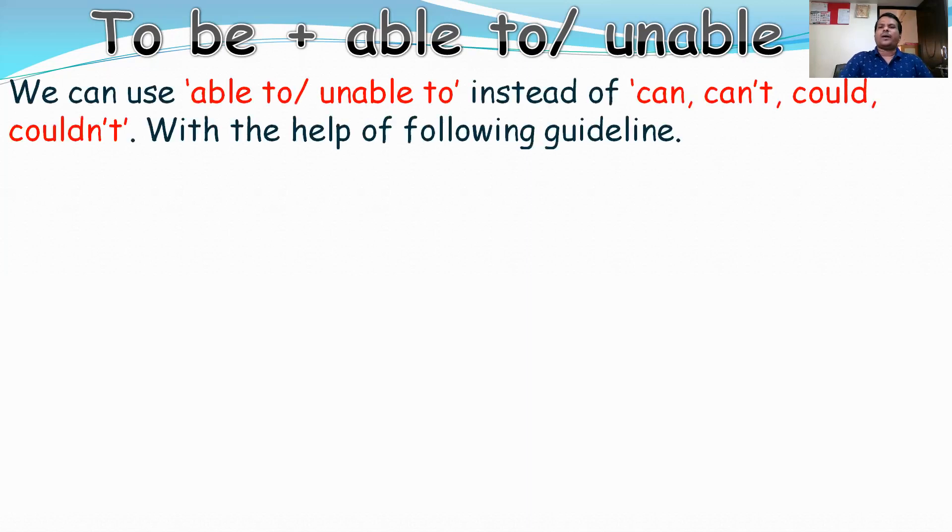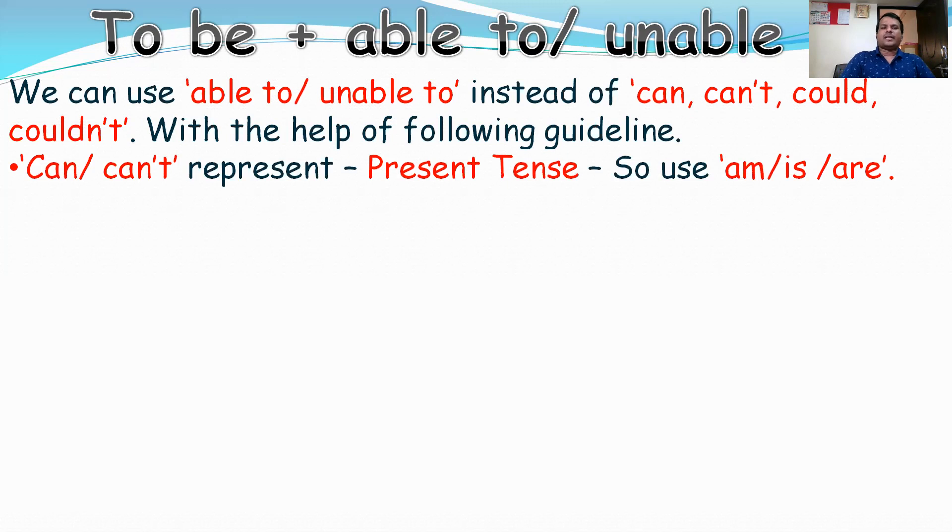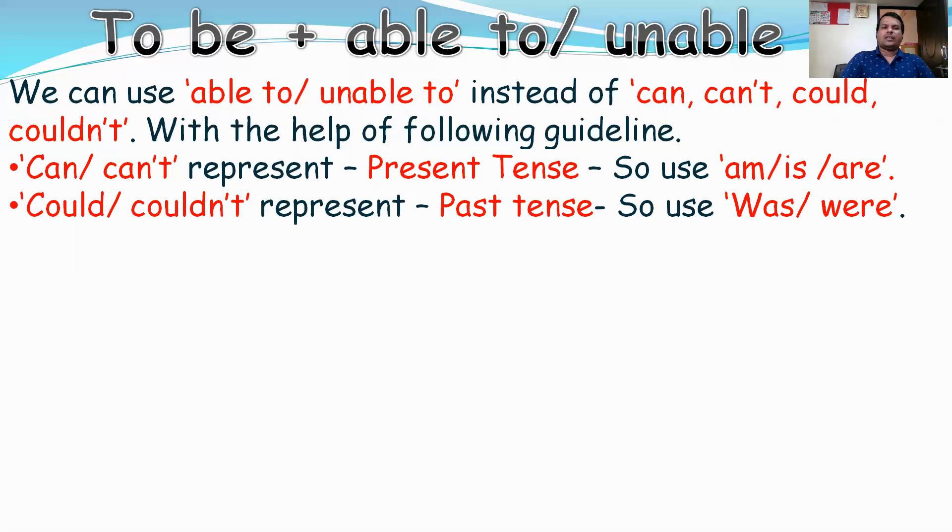We can use able to or unable to instead of can, can't, could, couldn't with the help of the following guideline. Can or can't represent present tense, so use am/is/are instead of them. Could and couldn't represent past tense, so use was/were instead of could or couldn't.